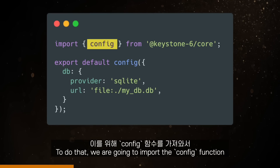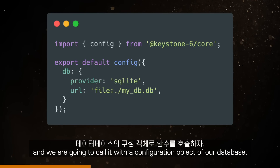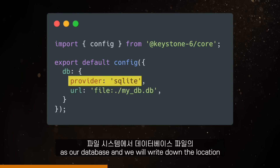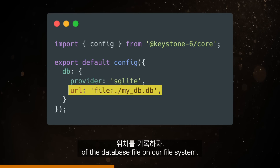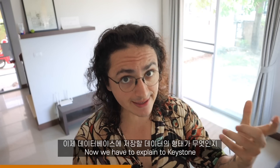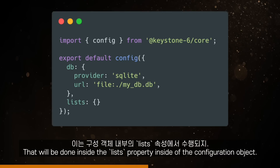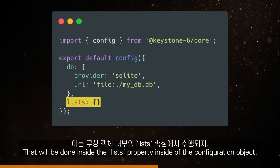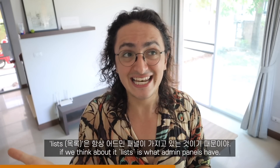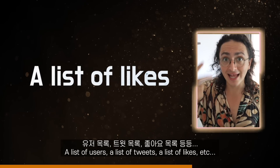To do that, we're going to import the config function, and we are going to call it with a configuration object for our database. We will tell Keystone that we are going to use SQLite as our database, and we will write down the location of the database file on our file system. Now we have to explain to Keystone what is the shape of the data we are going to save in our database. That will be done inside the lists property inside of the configuration object. The reason why it's called lists is because lists is what admin panels have — a list of users, a list of tweets, likes, etc.